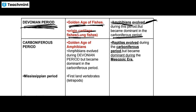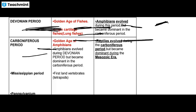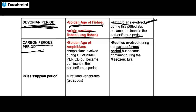The Carboniferous period is known as the Golden Age of Amphibians.